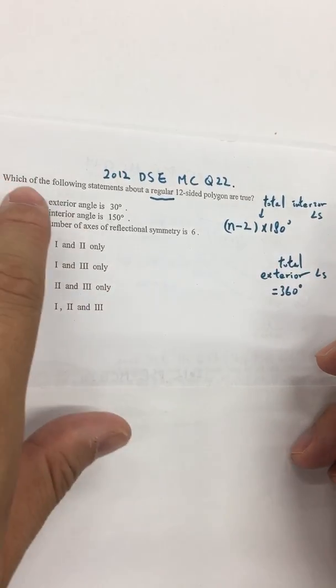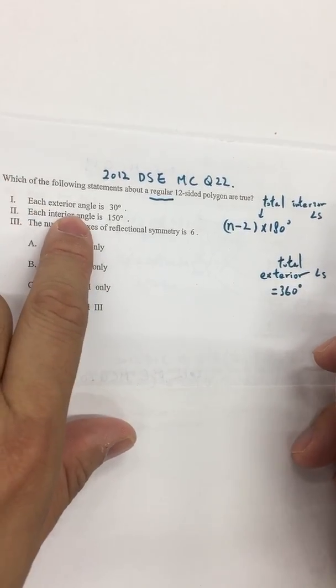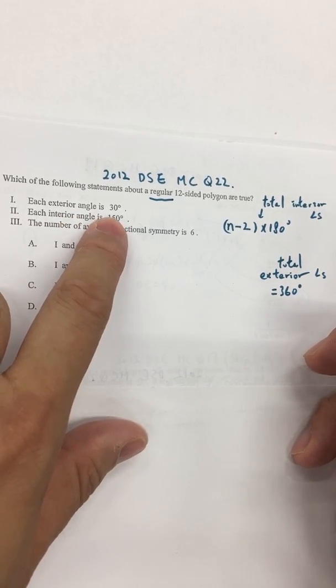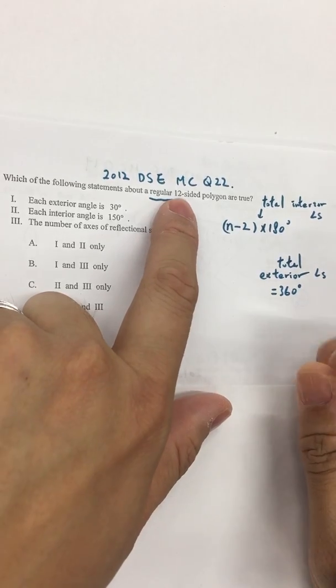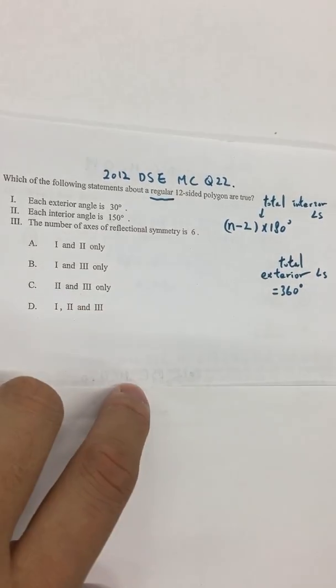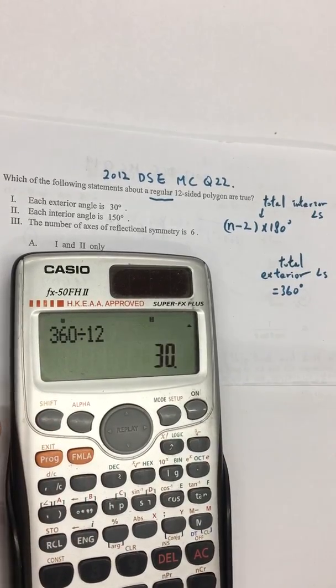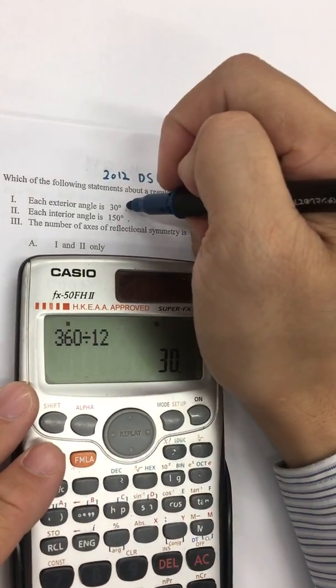So for the first one we have to see is that each exterior angle, how many are there? So how big is it? So let's take a look, it's 12-sided. So what we have to do is easy. Just use 360 divided by 12, so we can see 30. That means this is right.